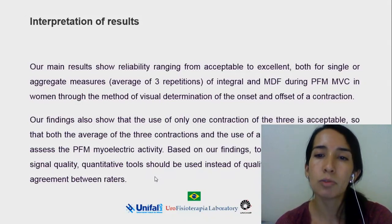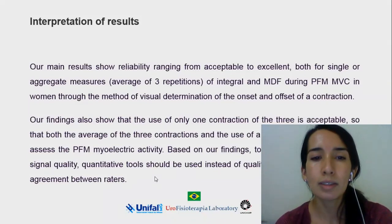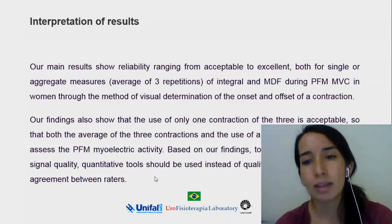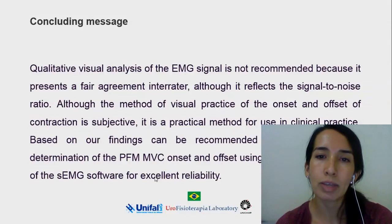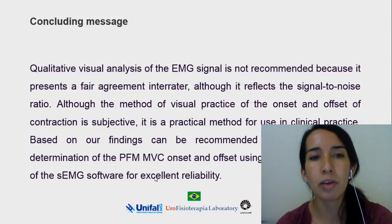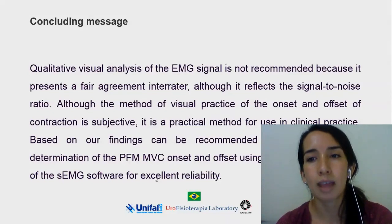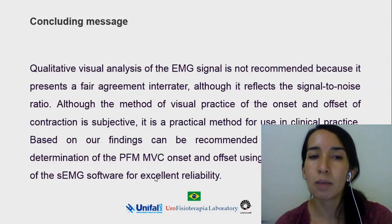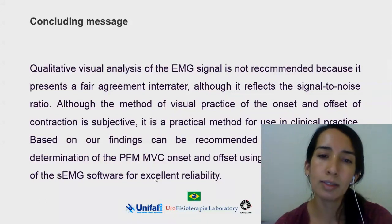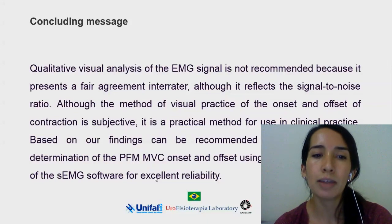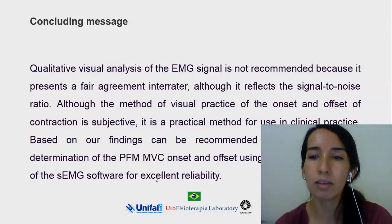Based on our findings, to assist in the evaluation of signal quality, quantitative tools should be used instead of qualitative evaluation due to fair agreement between raters. Qualitative visual analysis of the electromyographic signal is not recommended because it presents only fair agreement, although it reflects the signal-to-noise ratio. However, the method of visual detection of the onset and offset of contraction, while subjective, is a practical method for clinical practice, and we recommend the use of visual determination of female pelvic floor muscle maximal contraction onset and offset using the standard interface of the surface electromyography software for excellent reliability.